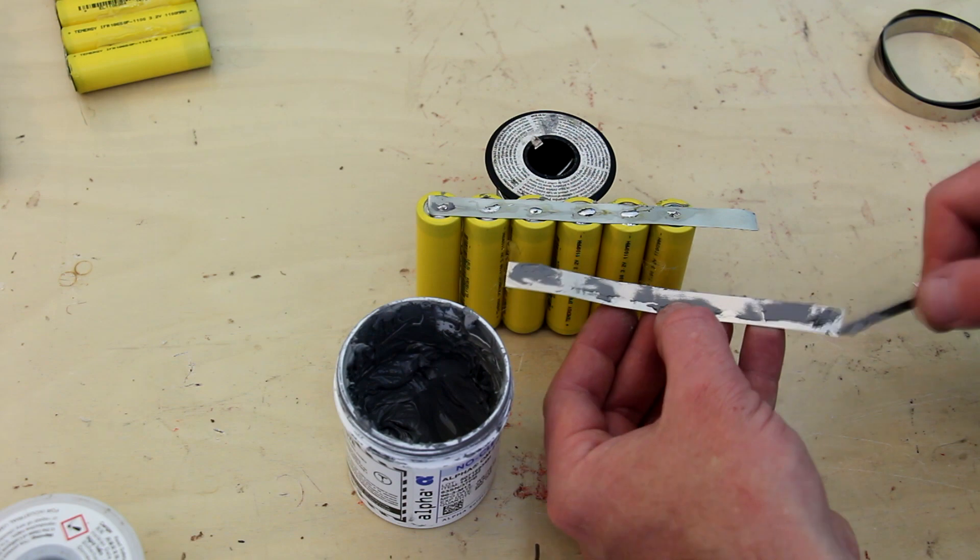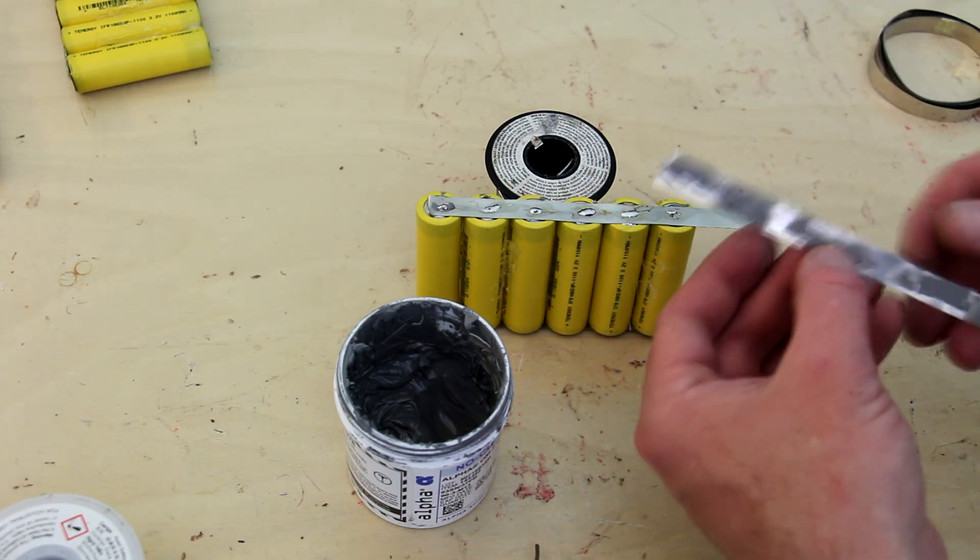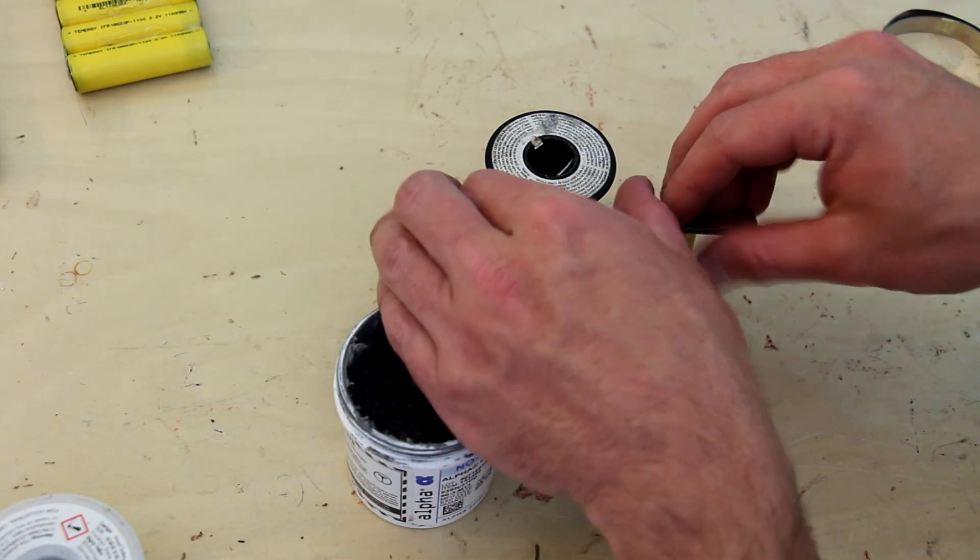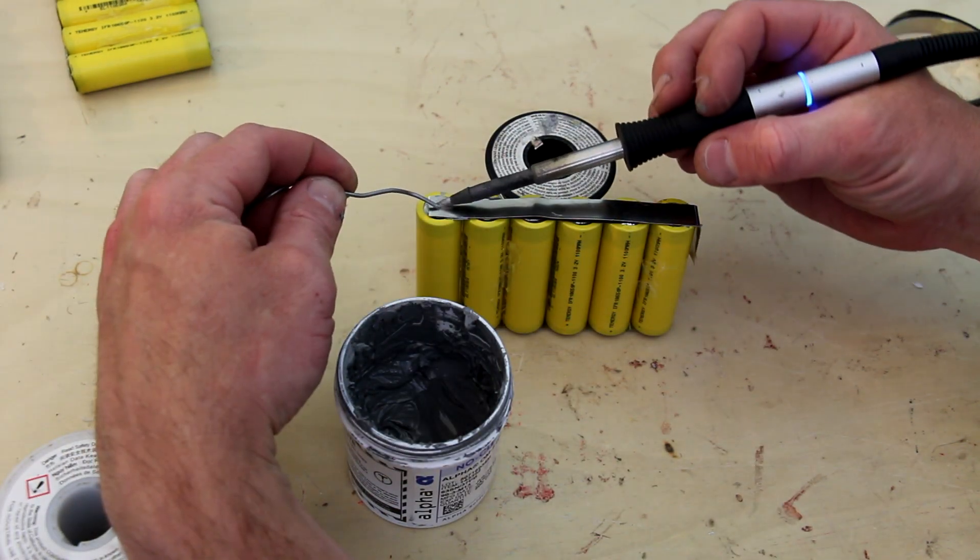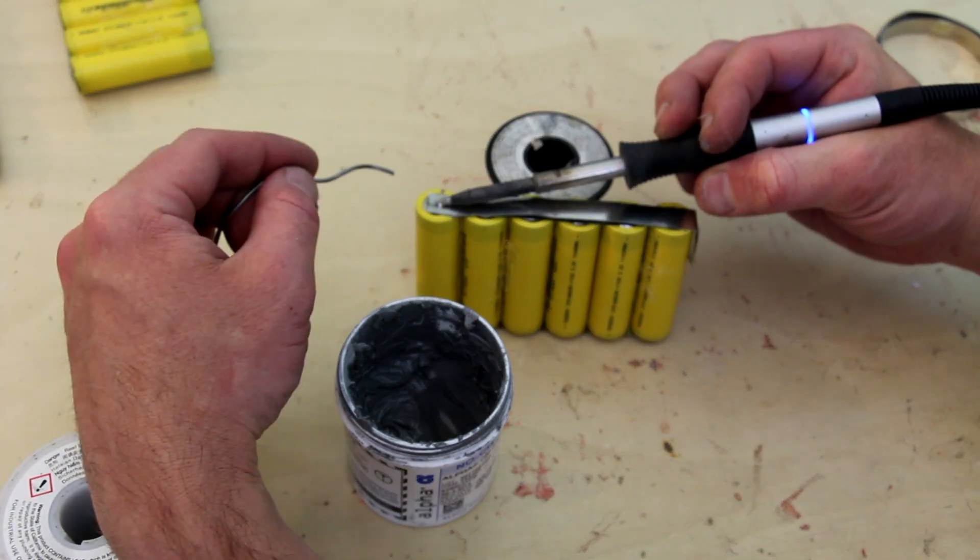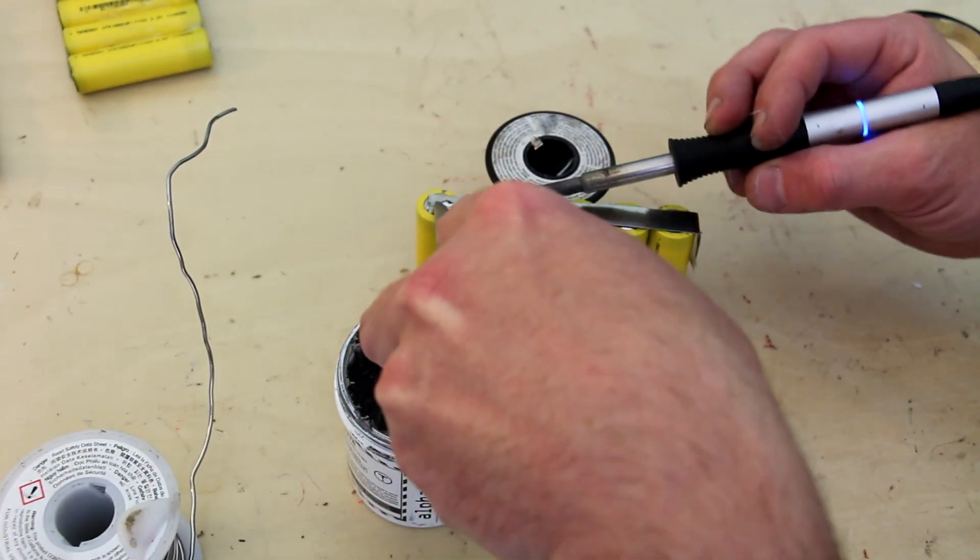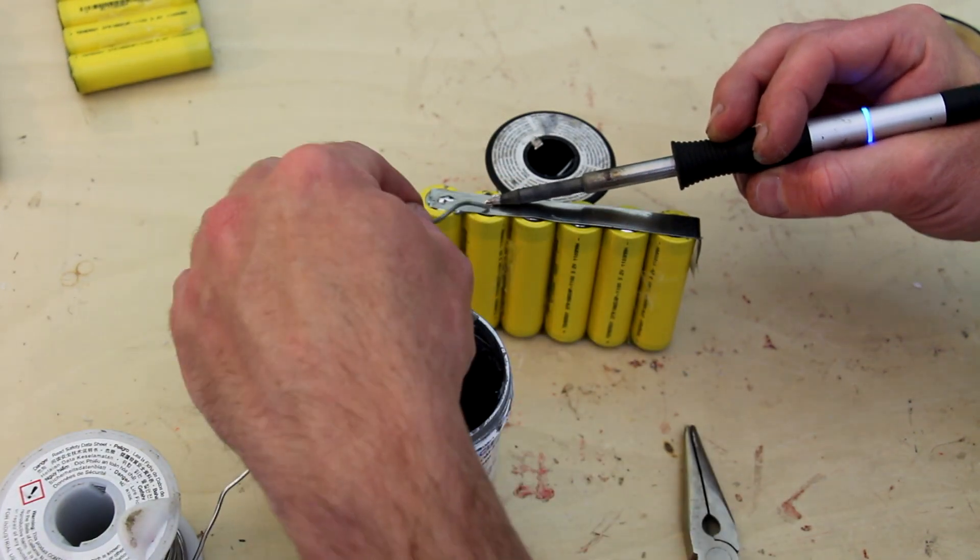This second nickel strip not only lowers the internal resistance and thus gives me more cold cranking amps for the bike, but it also gives me a little bit of insurance that the end of these tabs isn't going to burn away in the case the bike doesn't start easily and I need to stay on the starter a little bit longer than normal.